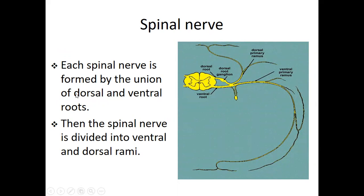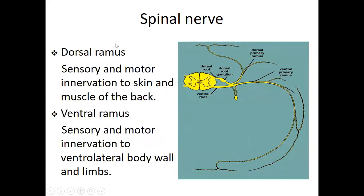Each spinal nerve is formed by the union of the dorsal root and the ventral root, which combine together to form the spinal nerve. The spinal nerve then divides into a ventral primary ramus and a dorsal primary ramus. The dorsal ramus provides sensory and motor innervation to the skin and muscles of the back. The ventral ramus provides sensory and motor innervation to the ventral lateral body wall and also the limbs.